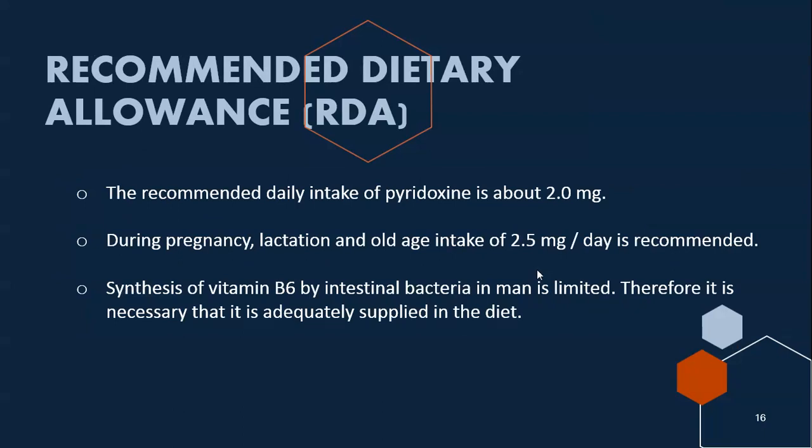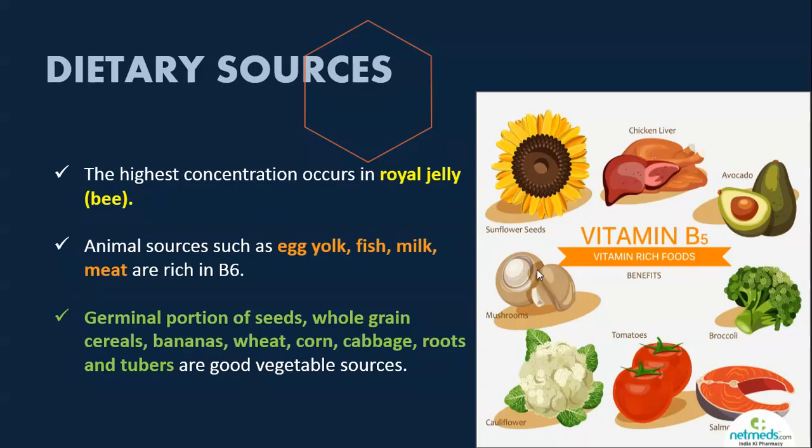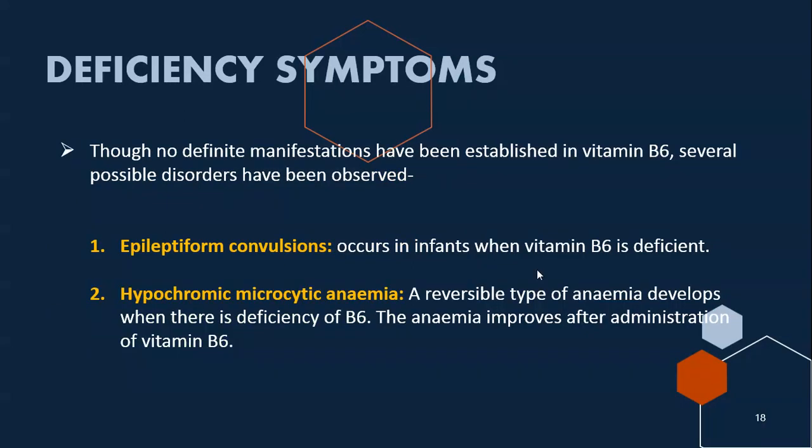The recommended dietary allowance (RDA) of Vitamin B6 is approximately 2 milligrams; during pregnancy and lactation, intake increases to 2.5 milligrams per day. Synthesis of Vitamin B6 by intestinal bacteria is limited, so adequate dietary supply is necessary. Rich sources include royal jelly, eggs, egg yolk, fish, milk, and meat. Good plant sources include germinated seeds, whole grains, cereals, bananas, corn, cabbage, and roots and tubers.